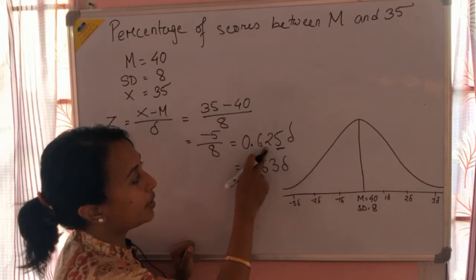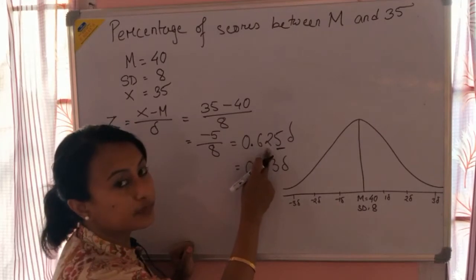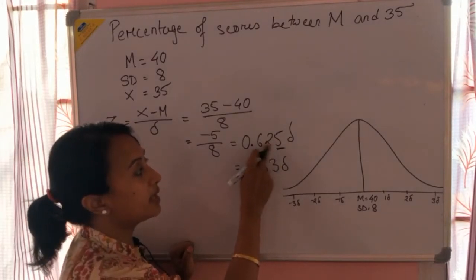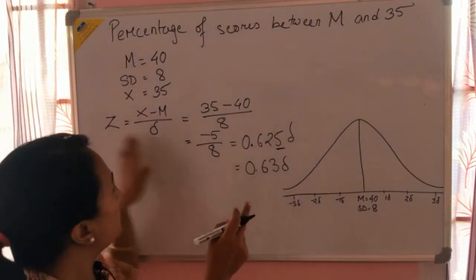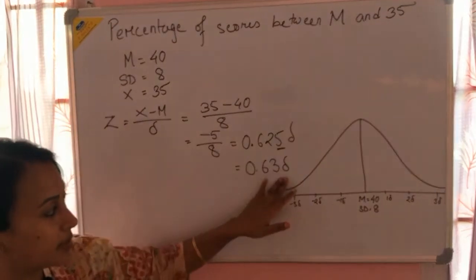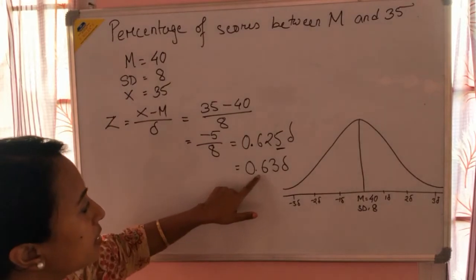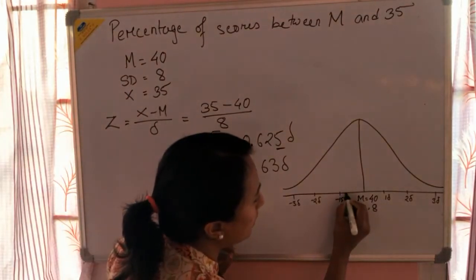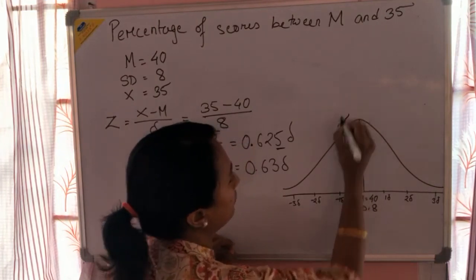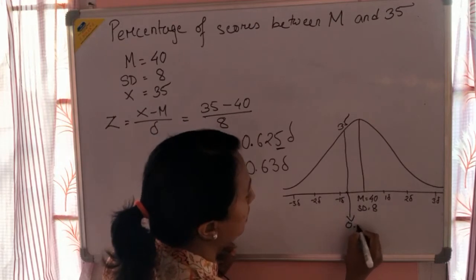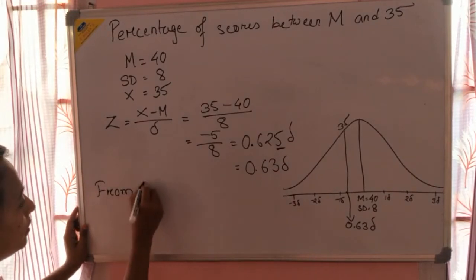Since the next digit after the two decimal places is 5 or more, we increase the second decimal digit by one, making it 0.63 standard deviation. If it were less than 5 we would have taken 0.62. So our Z-score is 0.63, meaning score 35 lies at approximately 0.63 standard deviations on the left side of the curve.